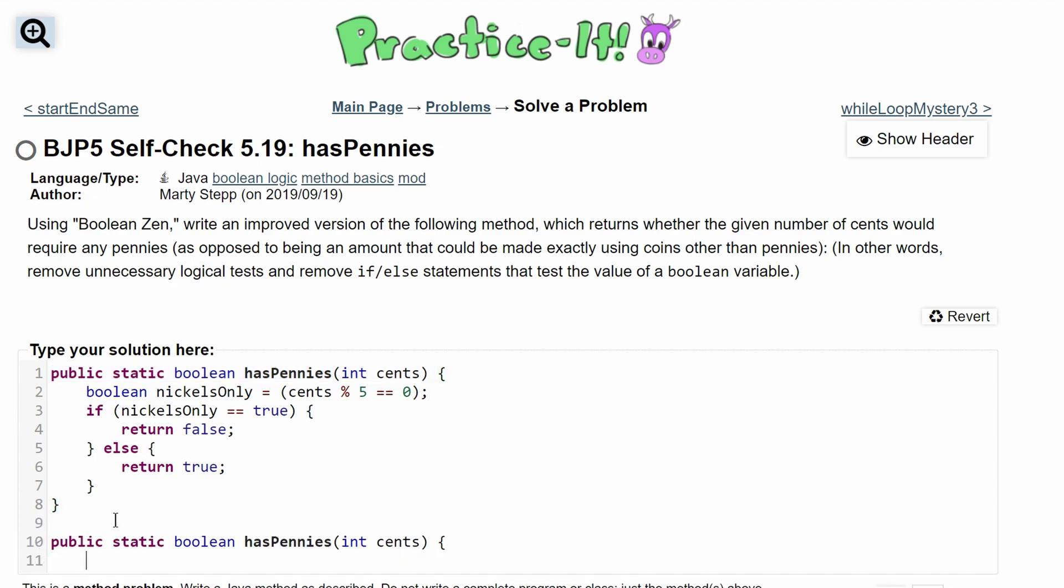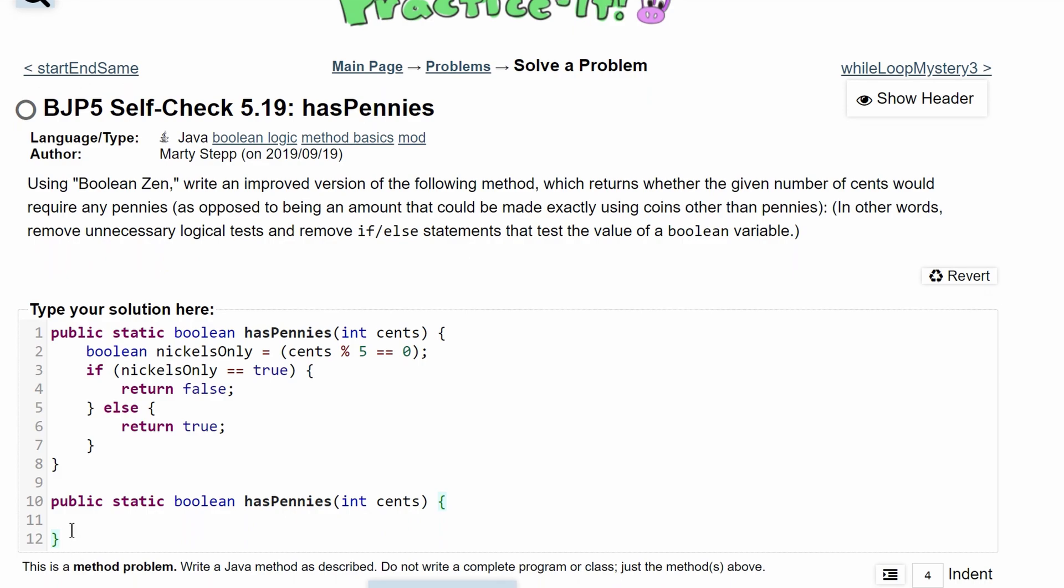We'll copy the method header and this bracket, and now we can start rewriting it. We want to look at what it's asking, which is to return whether the given number of cents would require any pennies.